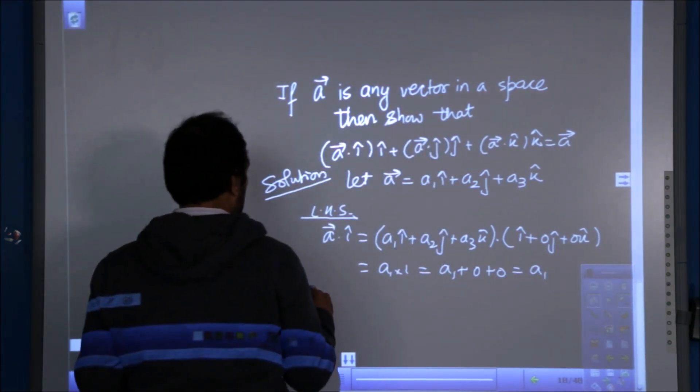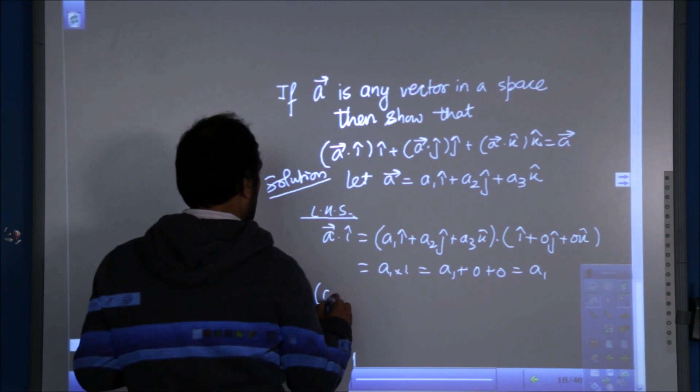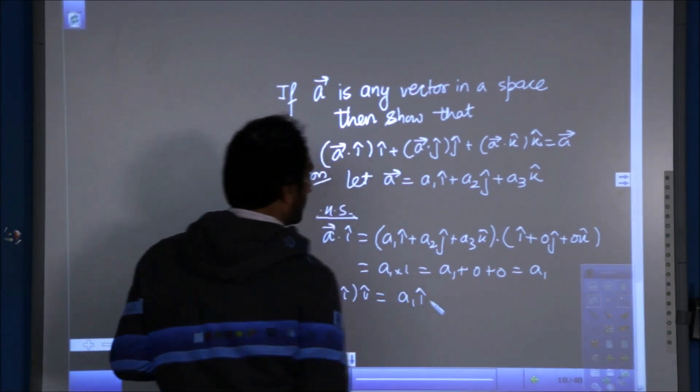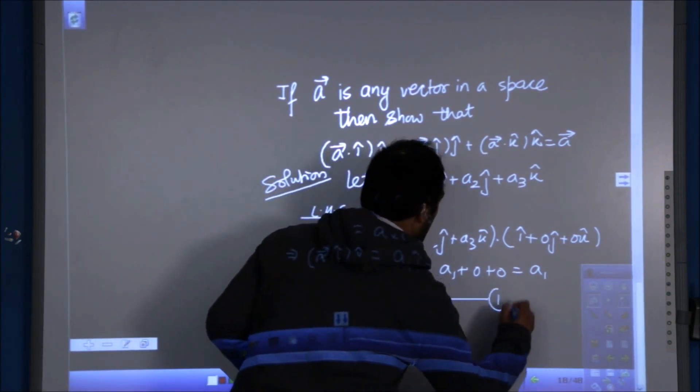So now, this implies that what is a1 dot i with i? That becomes a1i. I call it equation number 1.